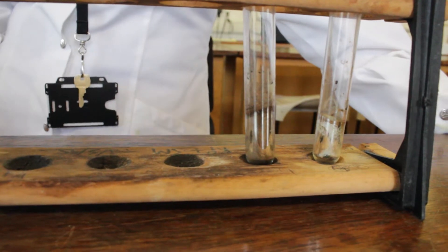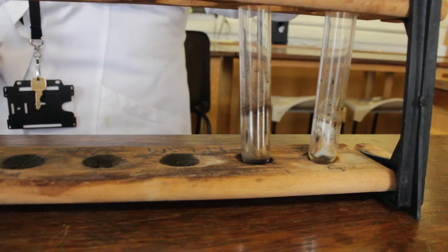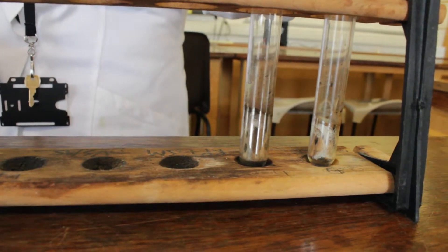Now today we are going to use an aldehyde which should give us a positive test in which a silver mirror forms around the side of a test tube.